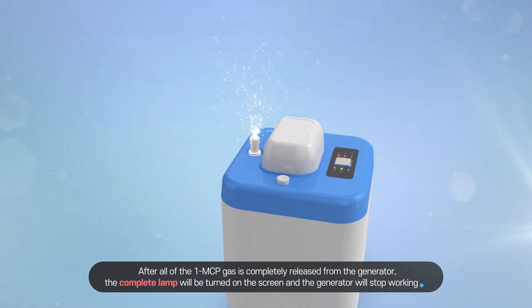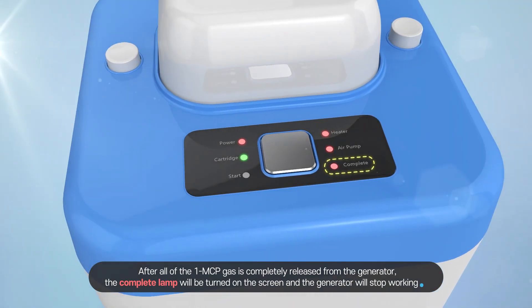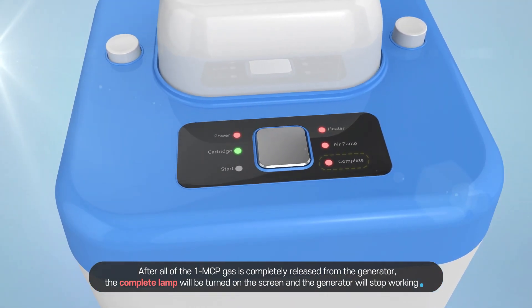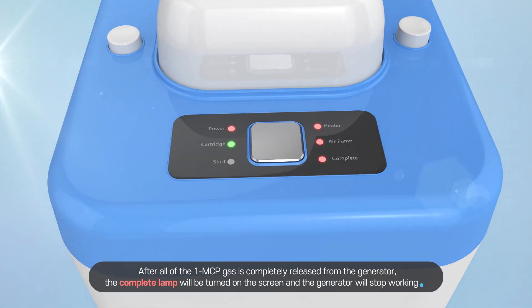After all of the 1-MCP gas is completely released from the generator, the complete lamp will be turned on the screen and the generator will stop.